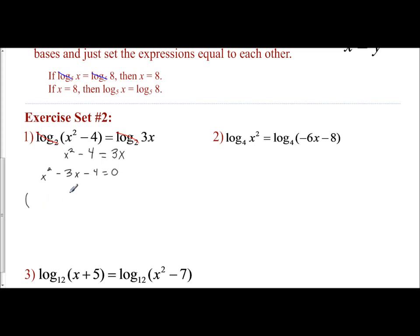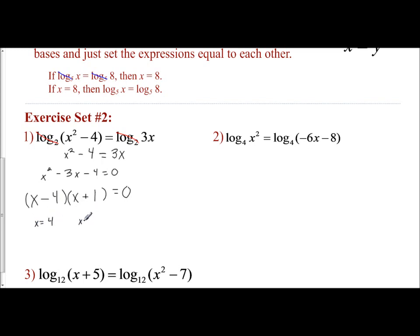To solve the quadratic, I'm going to factor. The only way to get x squared is x and x. I want two numbers that multiply to give me negative 4 and add to give me negative 3, and that would be negative 4 and positive 1. Setting each factor equal to 0: x minus 4 equals 0, which means x equals 4; and x plus 1 equals 0, which means x equals negative 1.